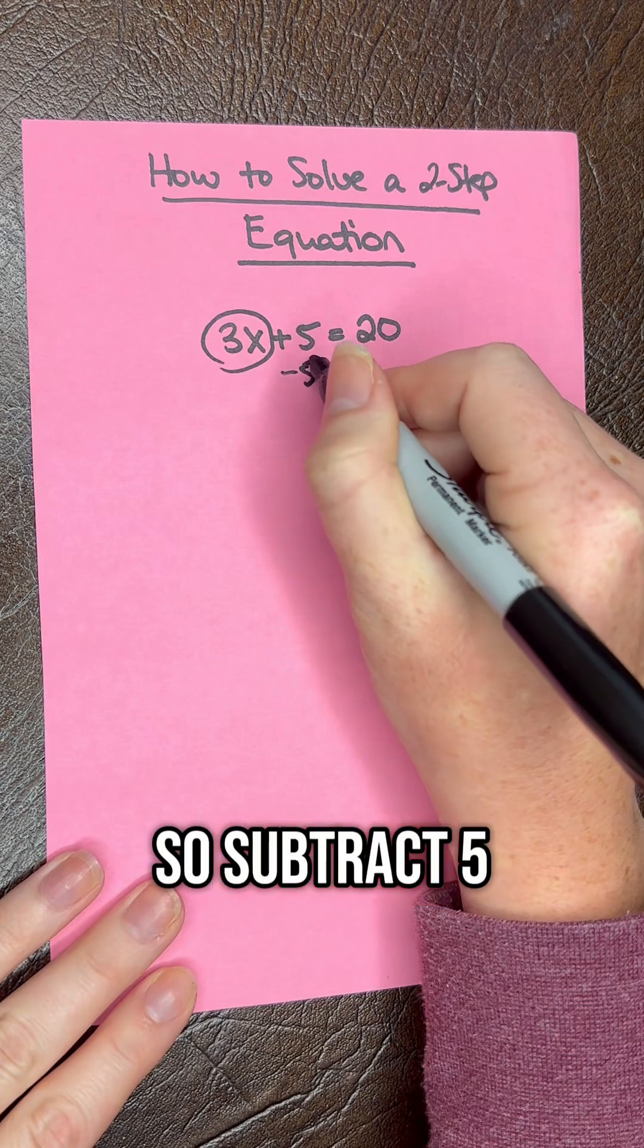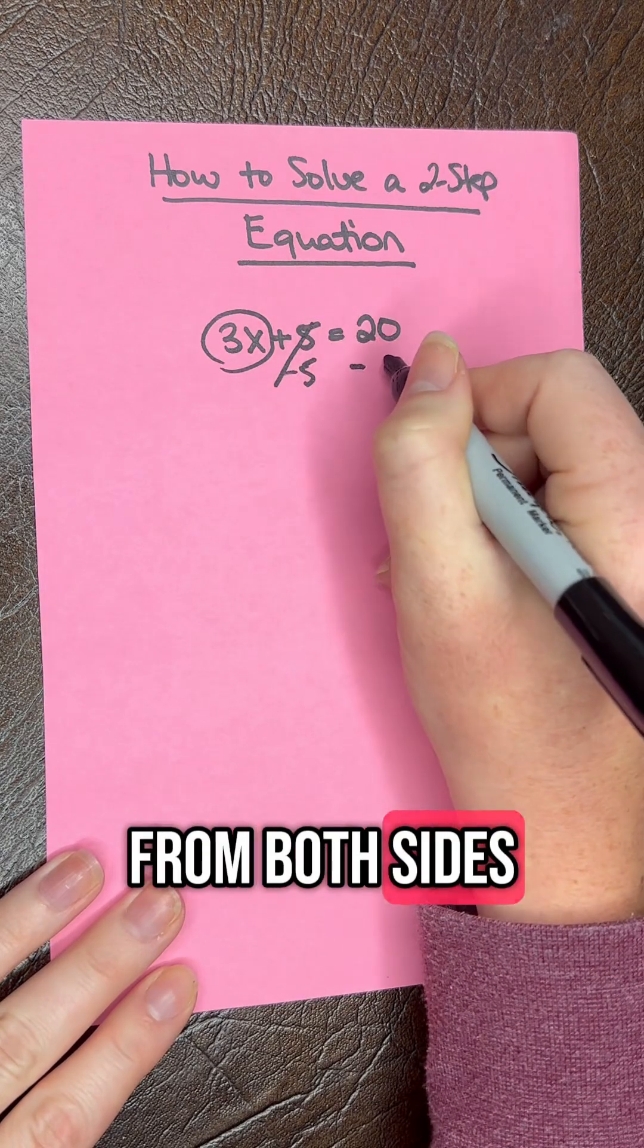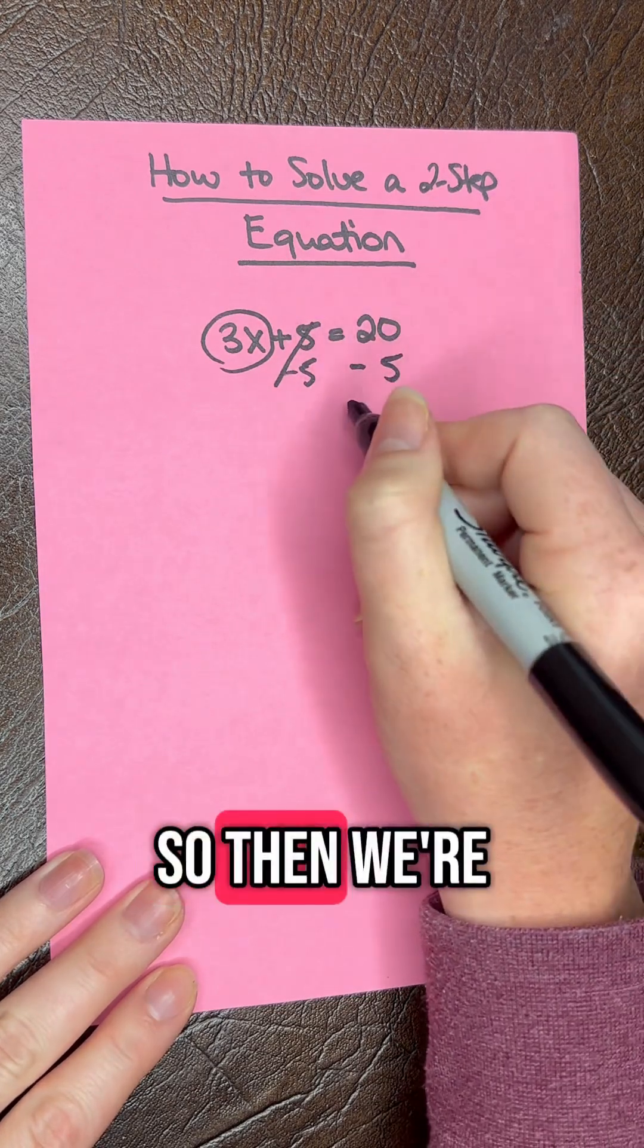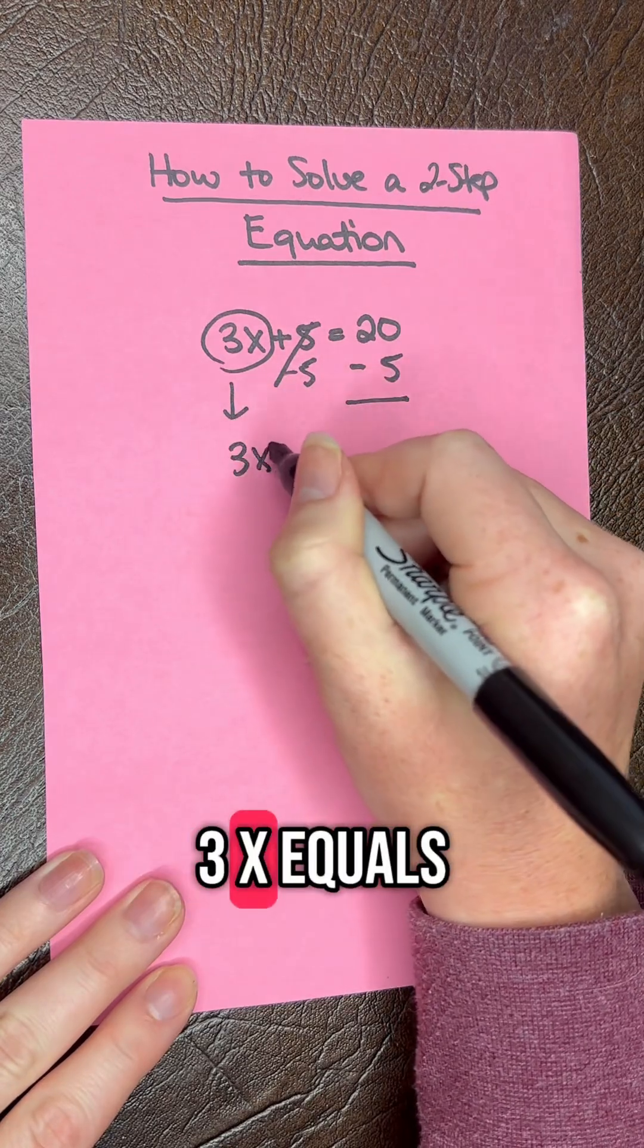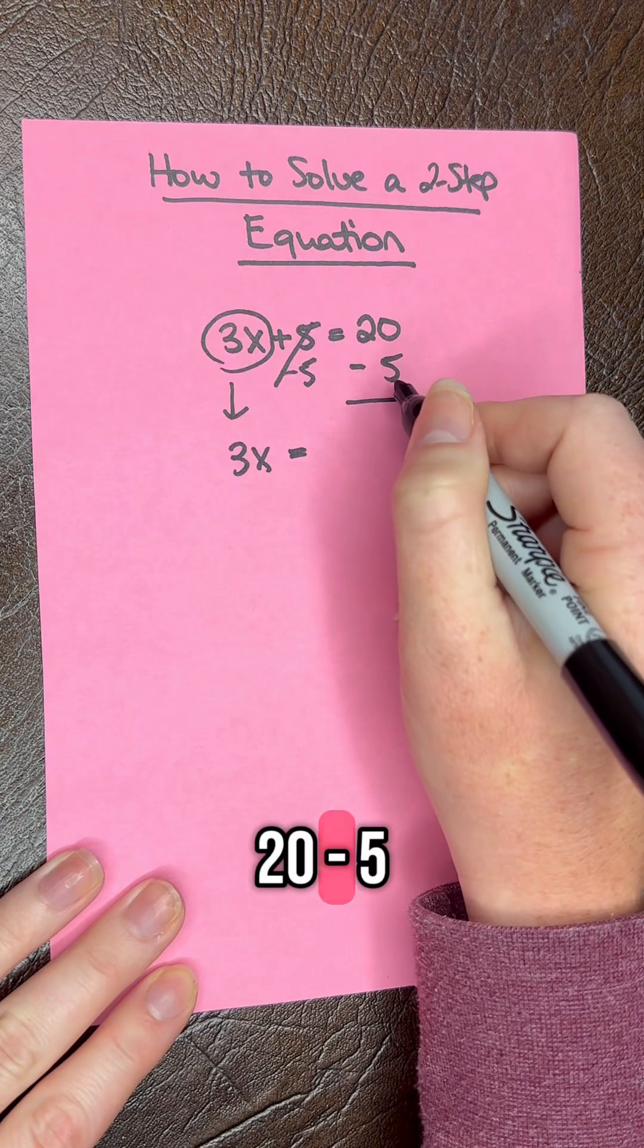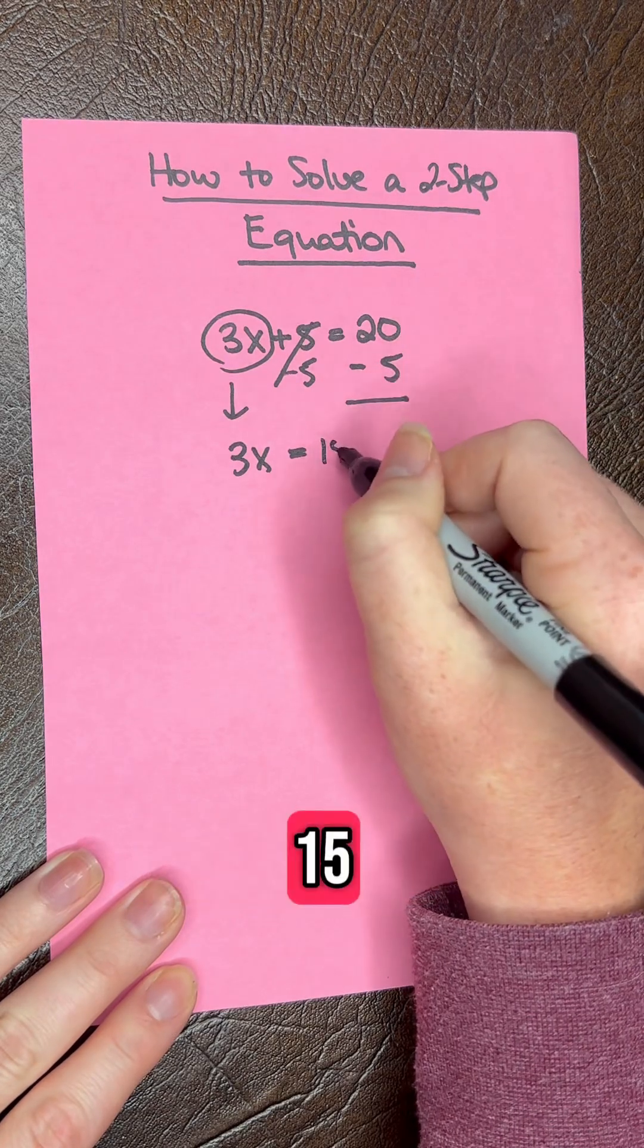Subtract 5 from both sides of the equation. Then we're going to do a rewrite. Carry this down. So we have 3x equals 20 minus 5, which gives us 15.